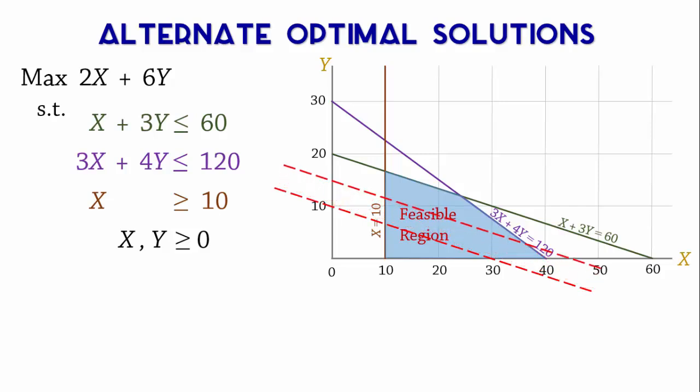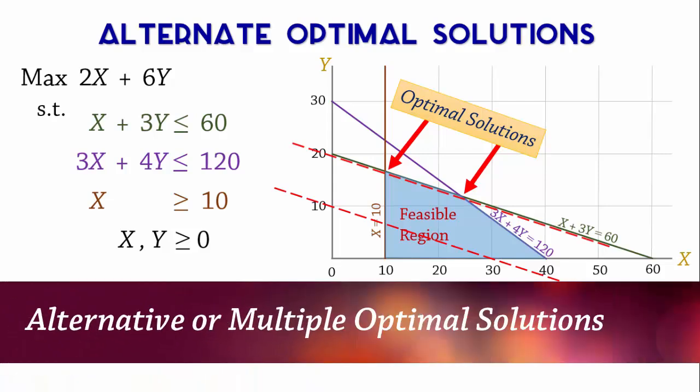moving this line shows that the optimal solutions occur at these two extreme points. That is, more than one optimal solution exists and we refer to these as alternative or multiple optimal solutions.